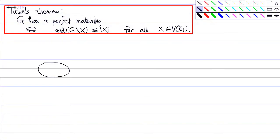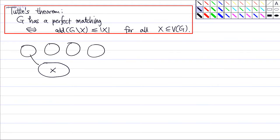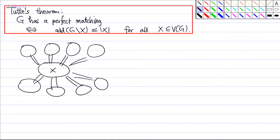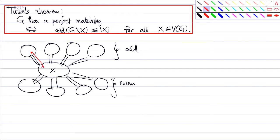Suppose I have set X, and if you delete it, you have many components. Moreover, some components have an odd number of vertices, and some components have an even number of vertices. Imagine that you have a perfect matching. Then in each odd component, you must have at least one vertex that is matched to a vertex in X. So each odd component requires at least one vertex in X.